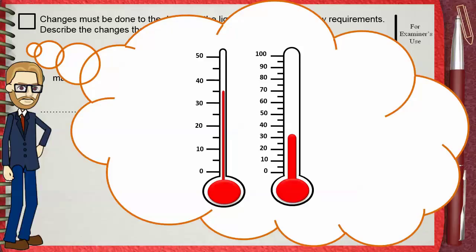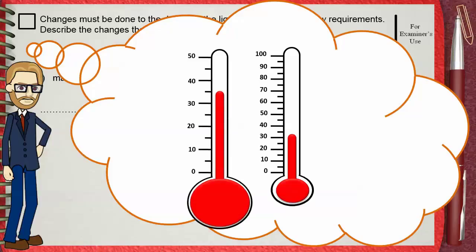So that mercury will rise higher for the same temperature change. Another change to increase the sensitivity of a thermometer is by using a bigger bulb.